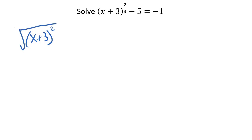But let's rewrite this actually as a radical. So I've got x plus 3 squared, right? Cube root of that equals, let's see, add 5 over, equals 4.